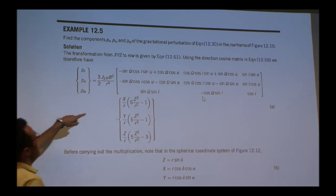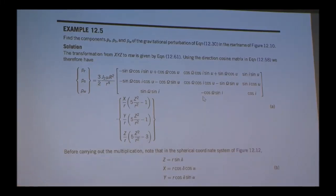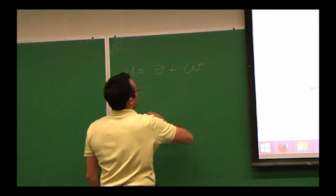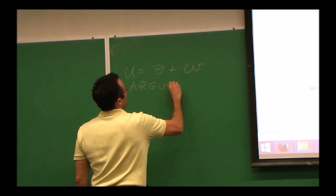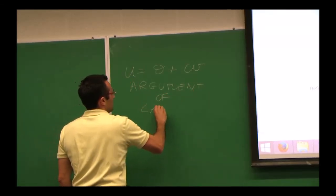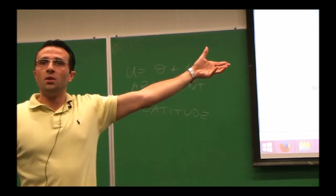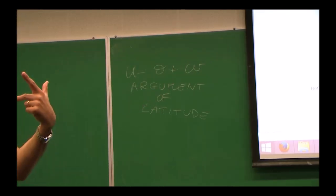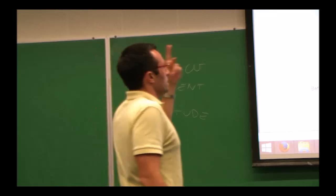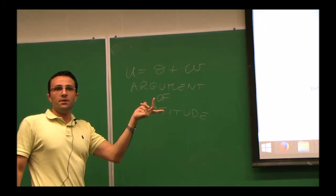This matrix here — where U is the true anomaly plus the Argument of Perigee, called the Argument of Latitude, just the addition of those two angles — is the matrix due to a 3-1-3 rotation that goes from ECI to the Perifocal Frame. Actually, this is the whole thing: it goes to the Perifocal Frame and then adds an additional rotation of theta to go to LVLH.